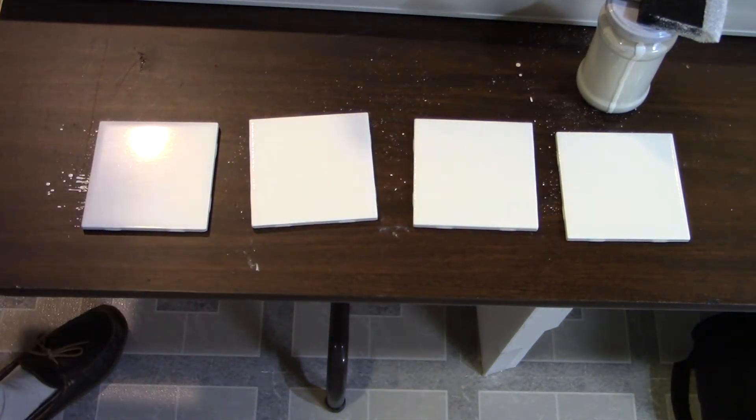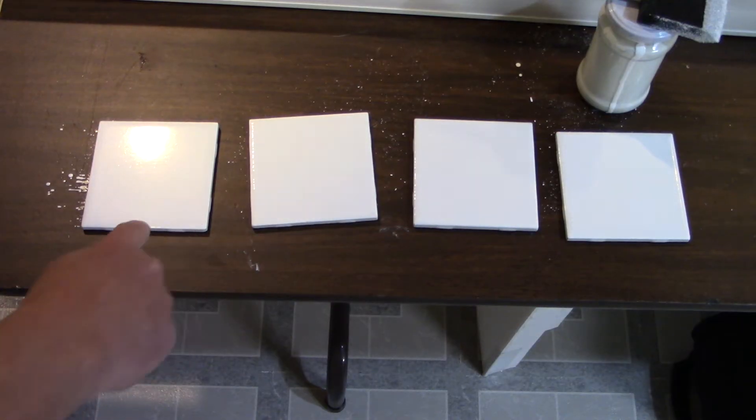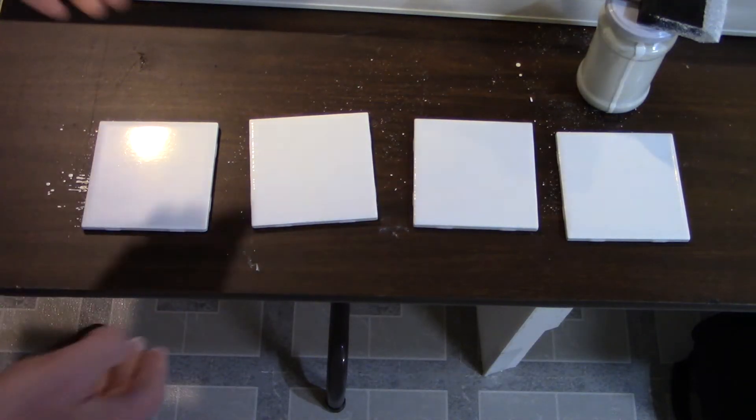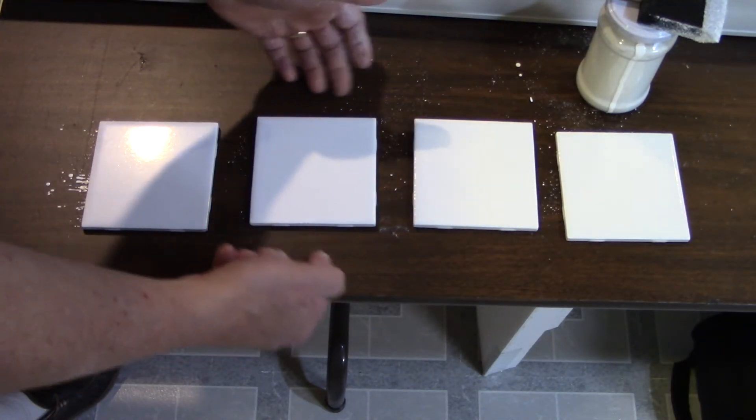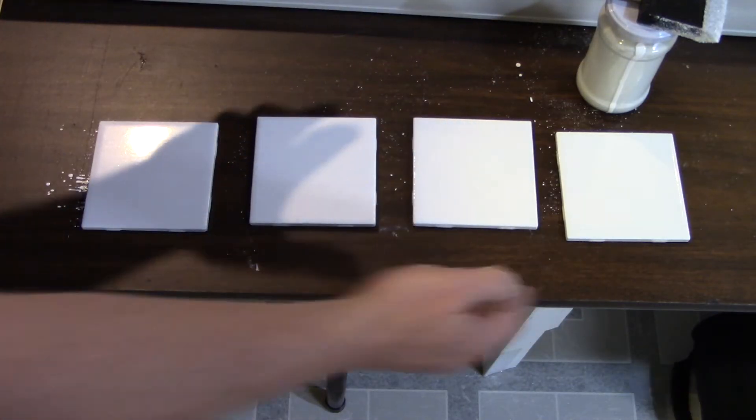The titanium dioxide is not stuck at all to the tile. It's just sitting on there, so if I just brush it with my finger or bump it, it'll come right off. So the cleaning process will be nice and simple.